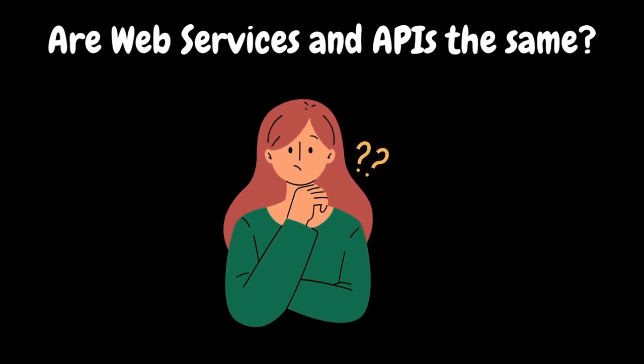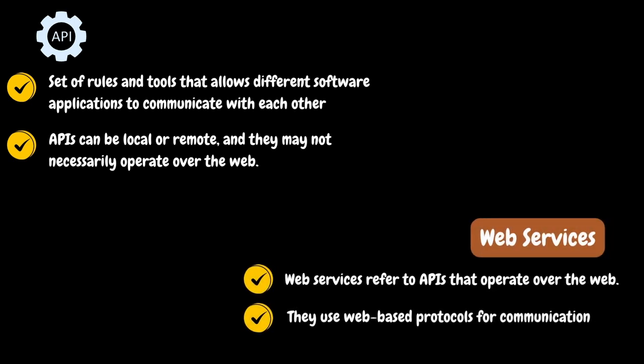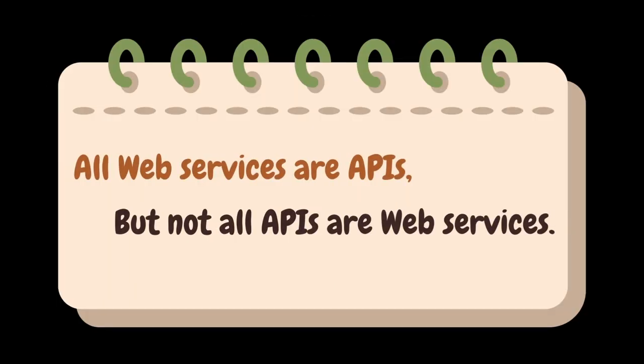One common question: are web services and APIs the same? APIs are a more general concept — a set of rules and tools that allows different software applications to communicate with each other. They can be local or remote and may not necessarily operate over the web. They can be libraries, classes, or functions used within or between programs. Web services specifically refer to APIs that operate over the web, using web-based protocols like RESTful APIs, SOAP APIs, or others. So you can think of web services as a subset of APIs — all web services are APIs, but not all APIs are web services.